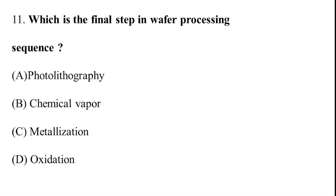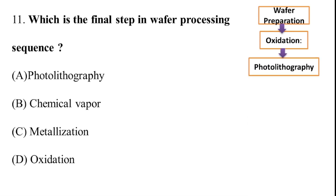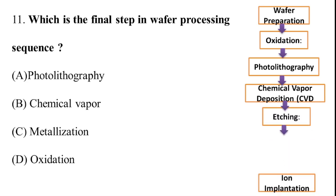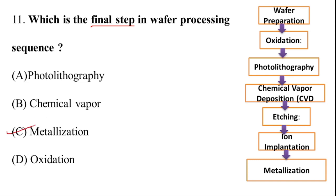Options: A) Photolithography, B) Chemical vapor deposition, C) Metallization, D) Oxidation. The IC fabrication process sequence is: wafer preparation, oxidation, photolithography, chemical vapor deposition, etching, ion implantation, and finally metallization. The final step is metallization. Option C is correct.